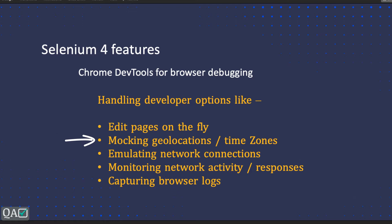We will go into detail about the code implementation and also the need for this mocking. Geolocations are basically required because your application may have features where it behaves differently depending on your current location. For example, if you are searching for your office location and the office is across different countries — if you are in India, India-specific addresses should show; if you are in Singapore, Singapore-specific locations should show — without needing to manually select country and city.